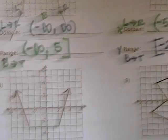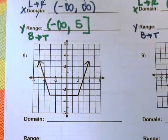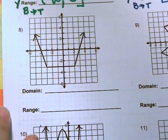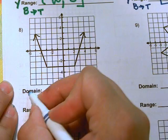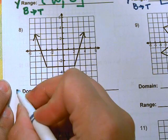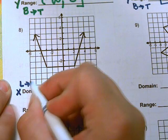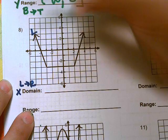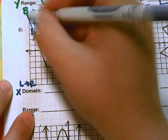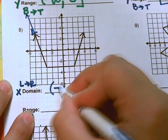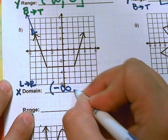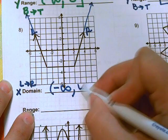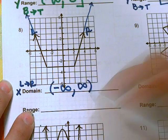Go ahead and pause the video and try number 8. For the domain, the x-axis goes left to right. On the left side the graph keeps going, so negative infinity. On the right side it also keeps going, so positive infinity.